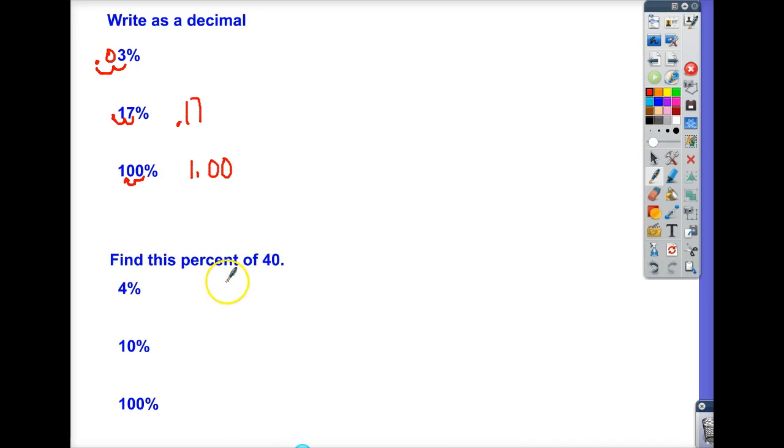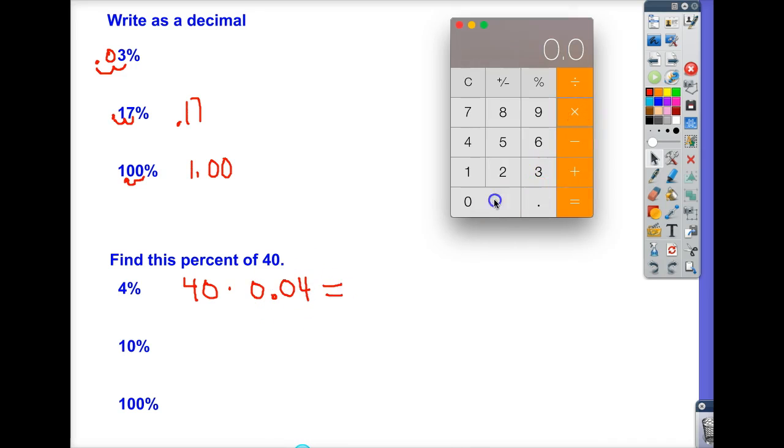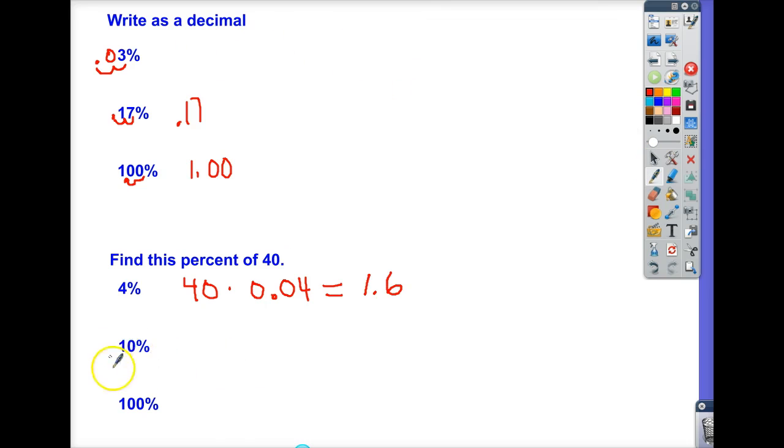So how do you find the percent of something? Well, you just take the decimal form and multiply it. So if we're finding 4% of 40, take 40, and we multiply it by 4%. 2 times 0.04 is 1.6. 10%, I'm going to take 40 times 10%. 10% is easy. I can just divide by 10, so that's just 4.